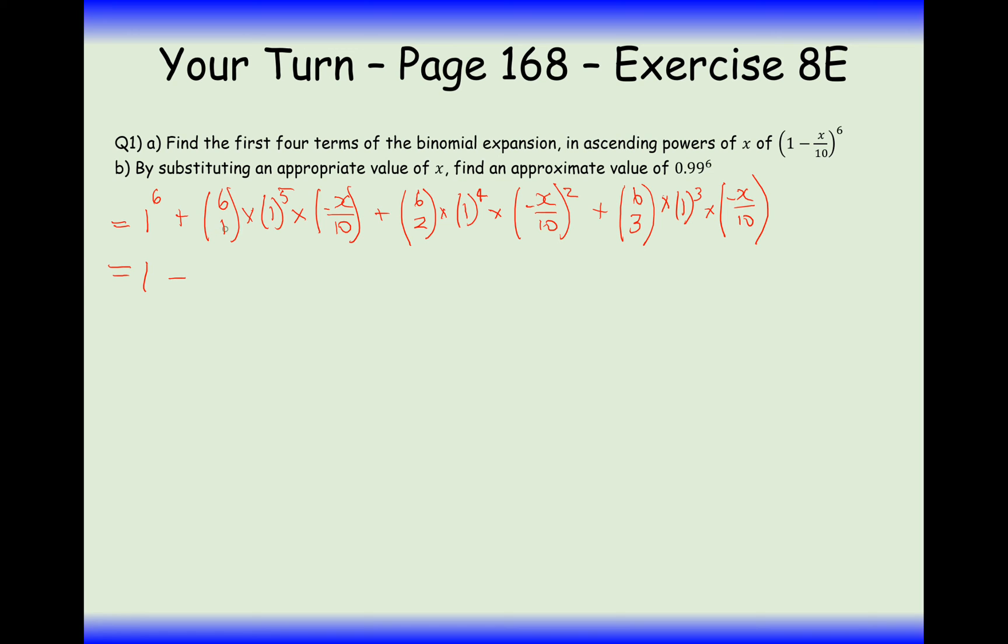6 choose 1 is 6. Divide that by 10, and you get 0.6x. The next value here is going to be 6 choose 2, times 1 over 10 squared. So divide that by 100, effectively, and we get plus 0.15x squared. The reason we get a plus here is because we're squaring a negative value here.